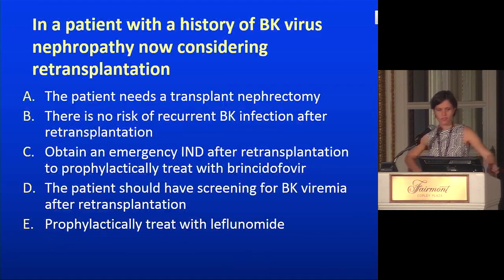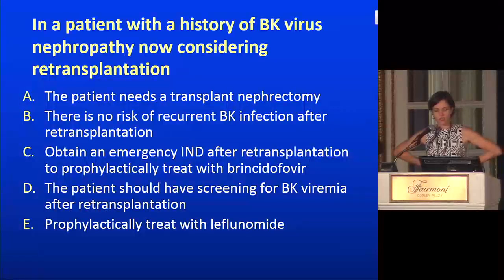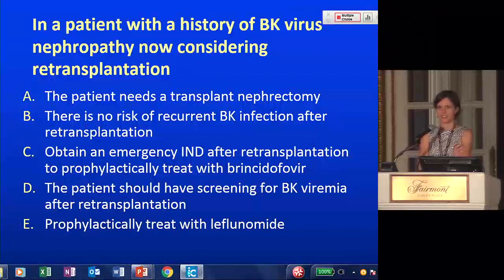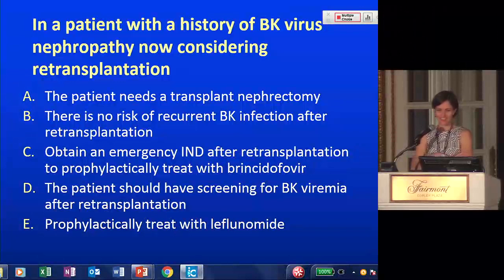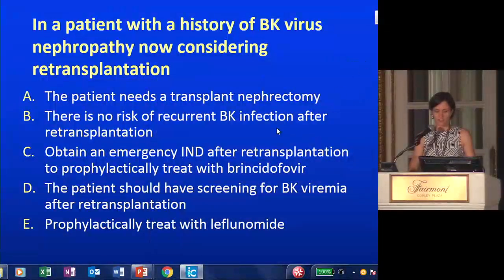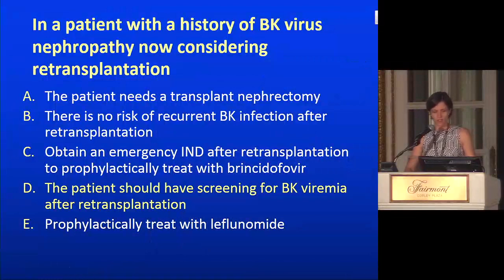Let's move on and talk about BK virus. In a patient with a history of BK virus nephropathy, now considering re-transplantation — the correct answer is D: the patient should have screening for BK viremia after re-transplant. BK virus is a polyomavirus, with 60 to 80% of adults seropositive worldwide. Primary infection probably occurs during childhood. JC virus is the other clinically important polyomavirus, though WU and KI may cause respiratory illness. BK causes the majority of polyomavirus-associated nephropathy in renal transplant patients.